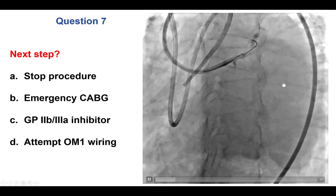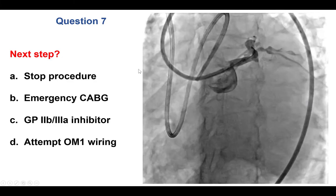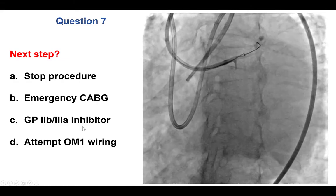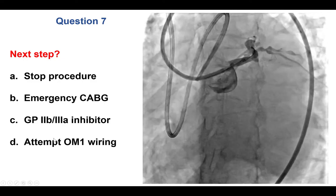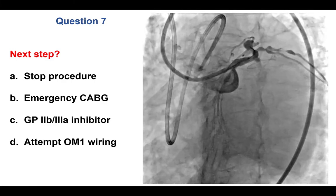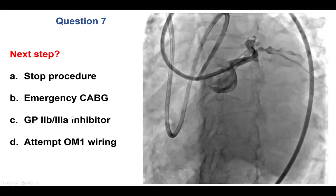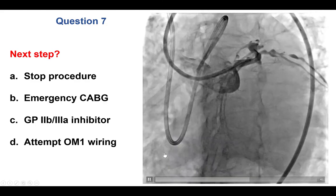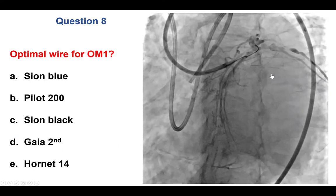The patient still has compromised flow to this branch with hemodynamics stabilized on ECMO. Options for next steps include stopping the procedure, emergency bypass, a 2B3 inhibitor, or attempting wiring of the first obtuse marginal branch. Emergency CABG is not a good option — the patient had already been turned down due to prohibitive risk, which is even higher in an emergent setting with antiplatelet and anticoagulation on board. Given ECMO cannulas, 2B3 inhibitors would create significant bleeding risk. So the decision was to attempt wiring of the obtuse marginal branch.